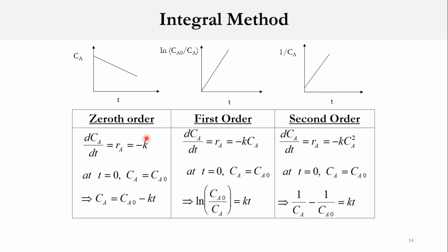To summarize: if we assume zero order, the plot between time and C_A should be linear. For first order, the plot is between t and the natural log of C_A0 over C_A, and if it is a linear plot, it confirms first order. For second order, the plot is between t and 1/C_A, and again it should be a linear plot. If none of these three give a linear plot, we cannot use the integral method and must use some other technique.